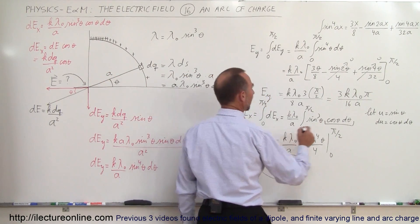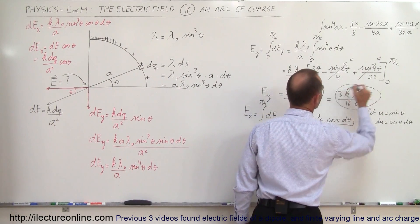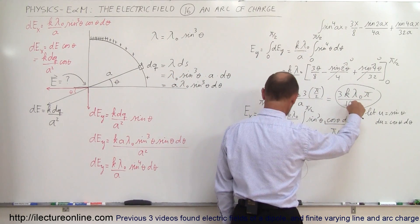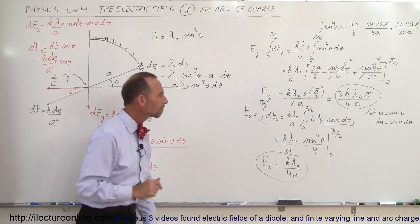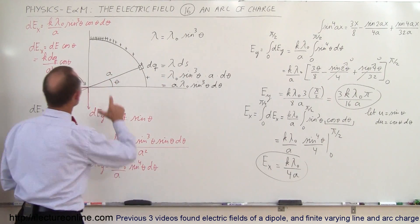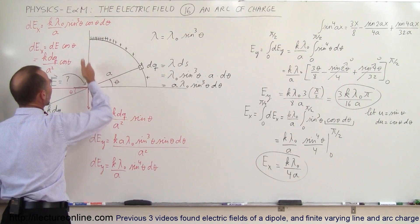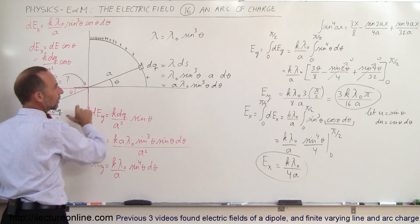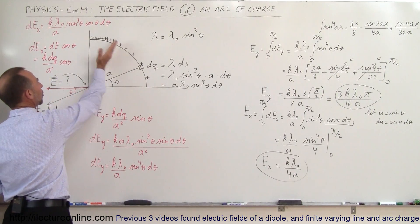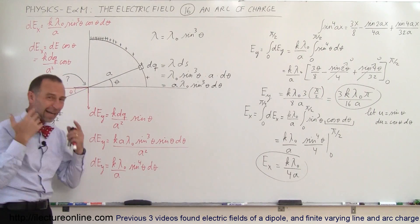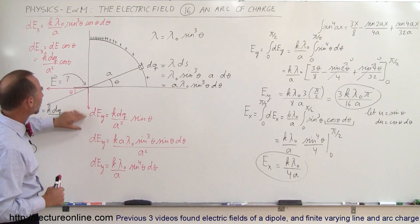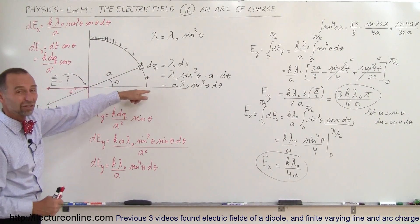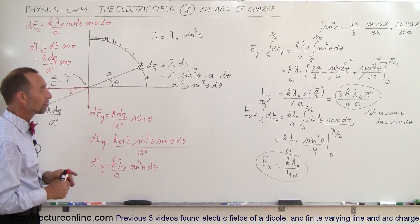Now I have Ex = k·λ₀/(4a) and Ey = 3k·λ₀·π/(16a). As a quick sanity check: 3π/16 ≈ 12/16, which is larger than 1/4, so Ey > Ex. This makes sense because most of the charge is at larger angles where it has a bigger effect on the y component, while less charge is near zero angle where it would affect the x component. So the results look reasonable.